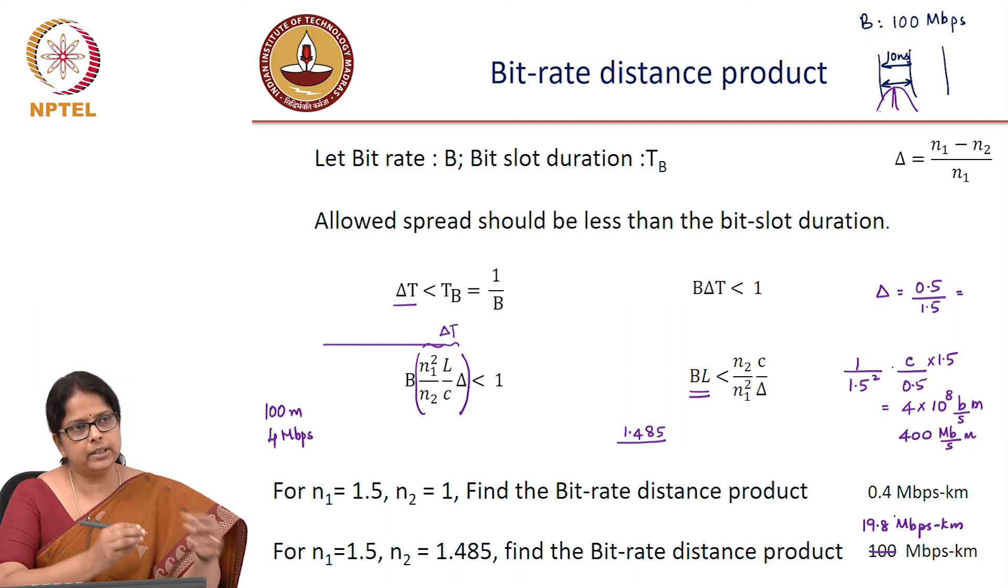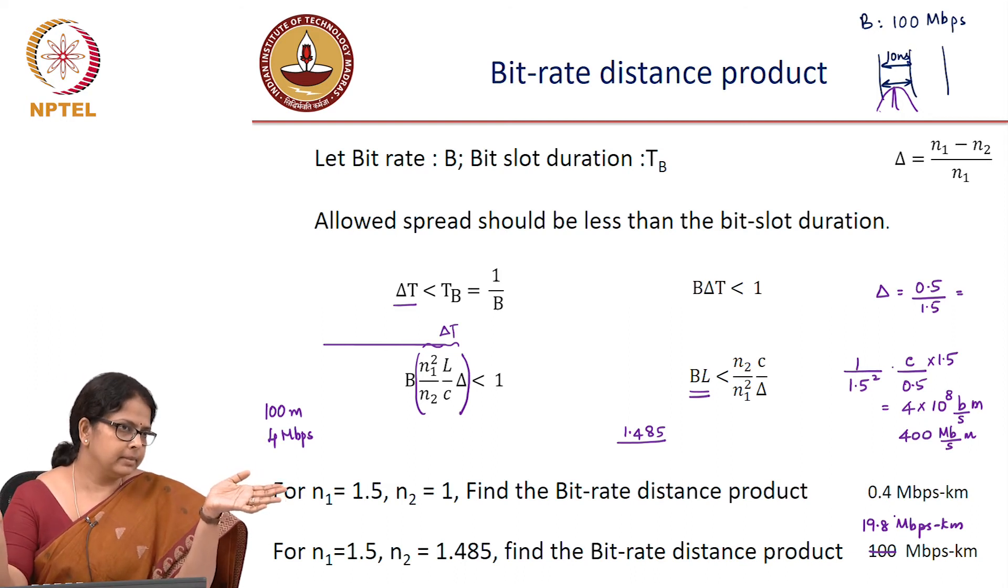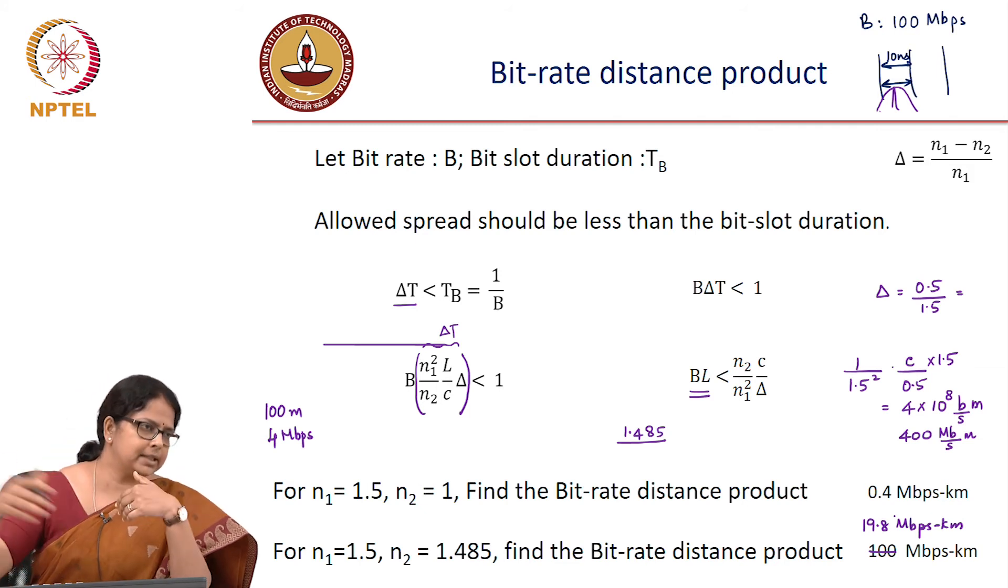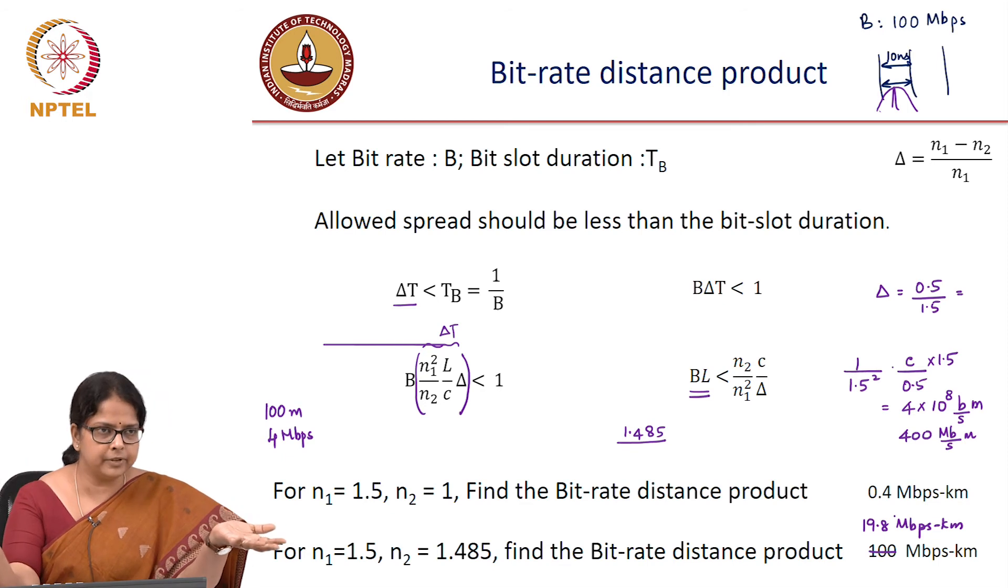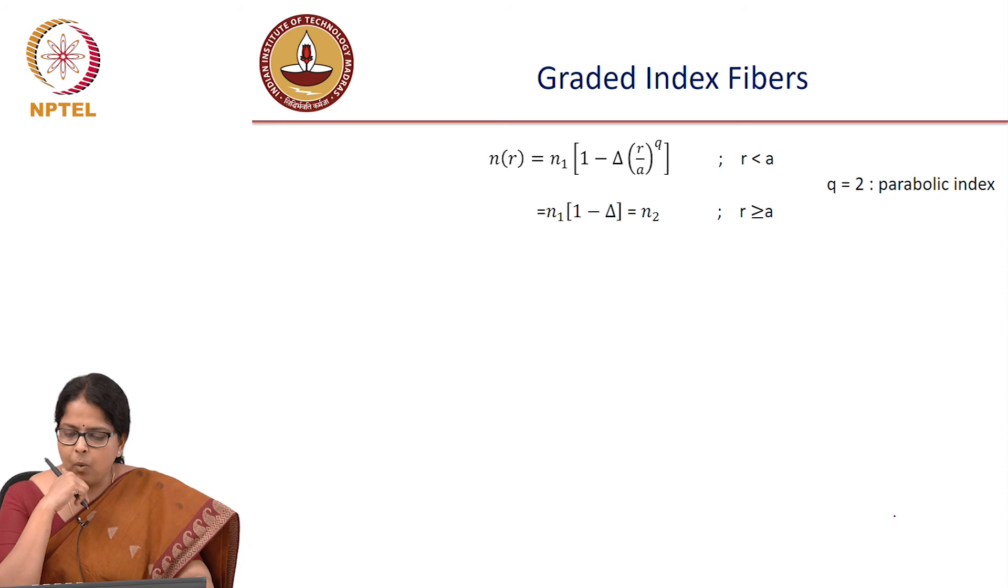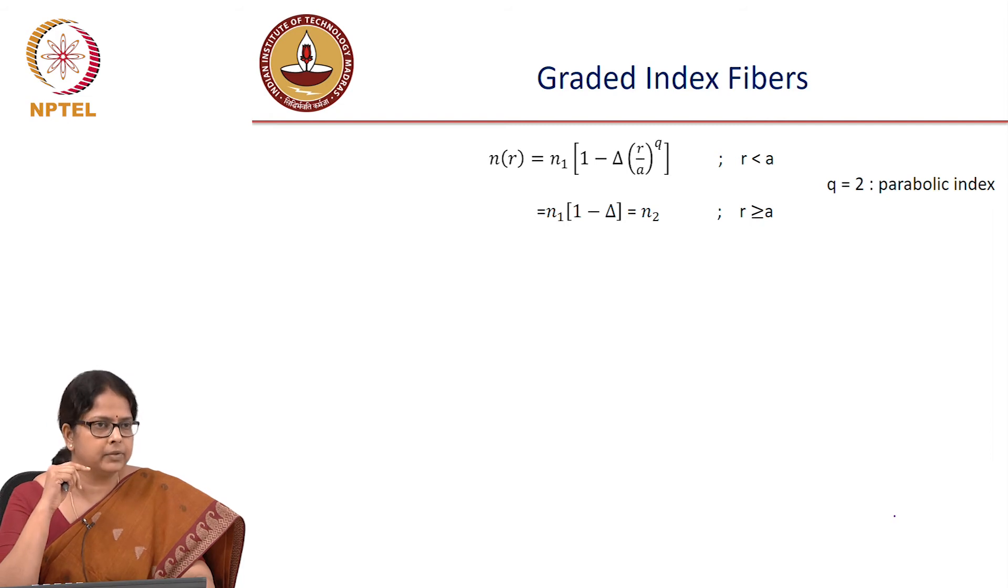Remember, the source line width did not matter here. We should now be able to consider the source line width. And when there is a source line width, what happens? In addition to this delay, the different wavelengths propagate with different speeds and so we will talk about the difference in arrival times of the different wavelengths and so you have a dispersion.